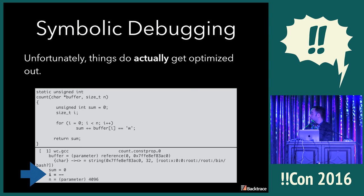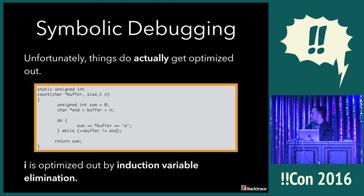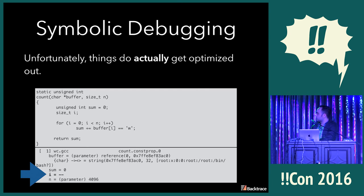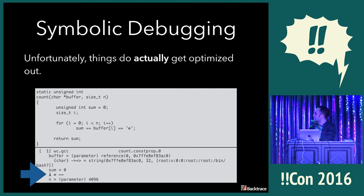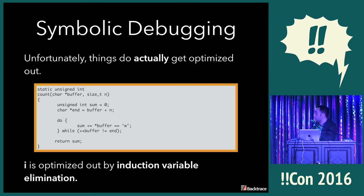There are cases where things do get truly optimized. Using a different set of compilation flags to compile count, if we run a debugger we see that i cannot be retrieved. Why? This code loops through an array indexing buffer off of i — but what the compiler does is determine it doesn't need i at all. It just uses pointer semantics instead, which reduces the number of registers it has to use. In this case i is completely optimized out.